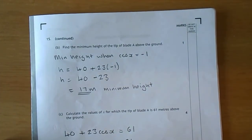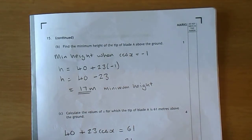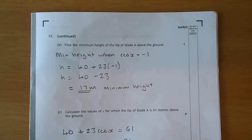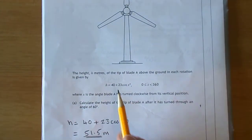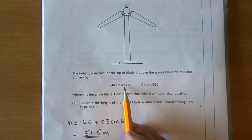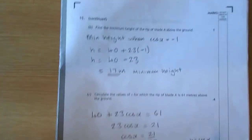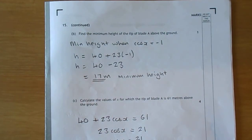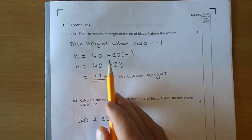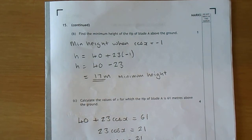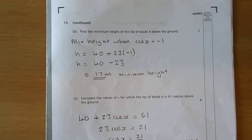Part B: Find the minimum height of the tip of blade A above the ground. The formula for the height is given there, and the only part that affects it is cos(x). The smallest cos(x) can ever be is -1, so the smallest the height can be is when cos(x) = -1. That's 40 + 23(-1), which is 40 - 23, which is 17 meters.